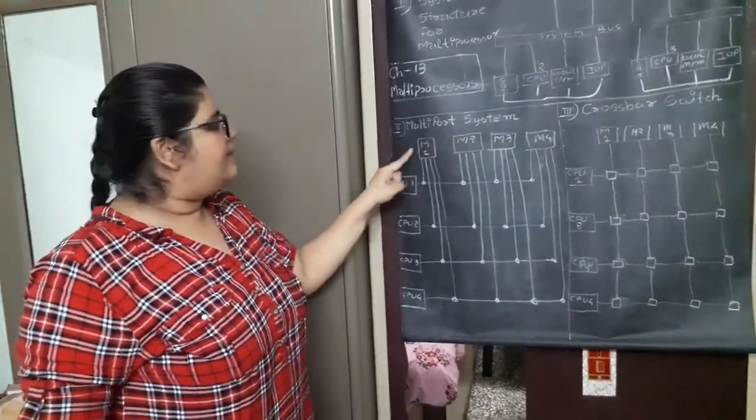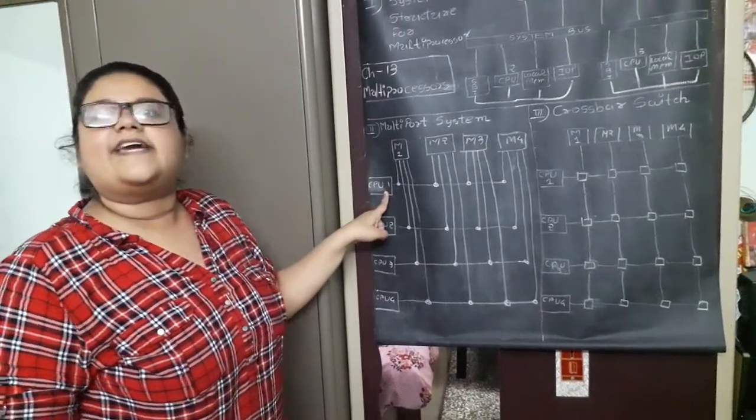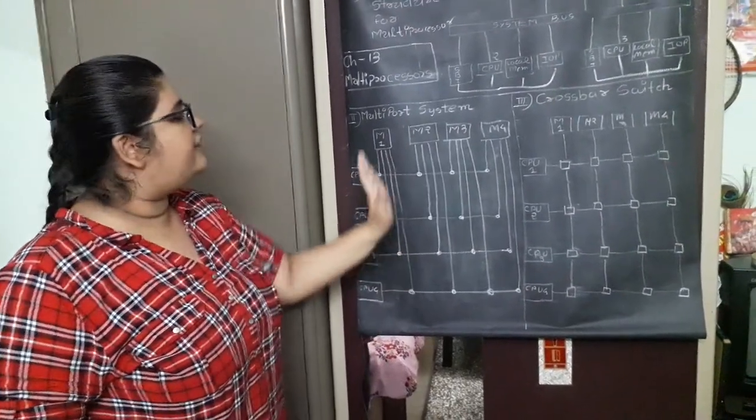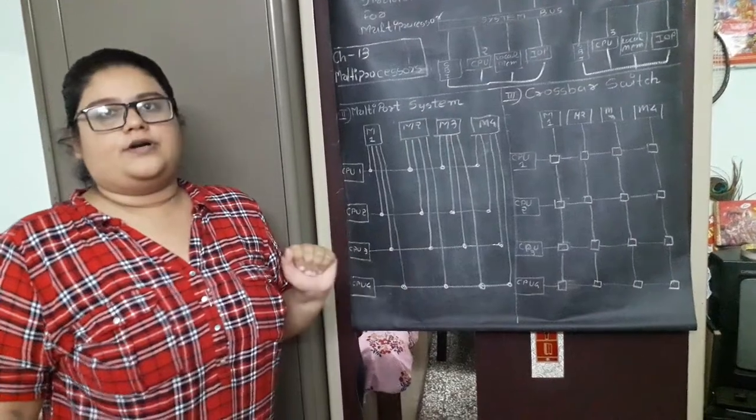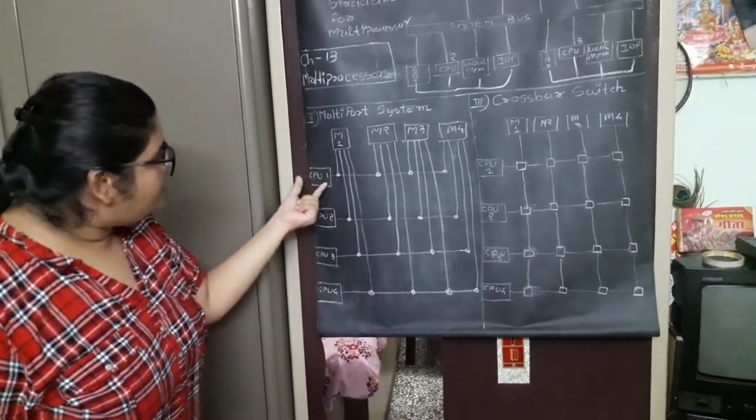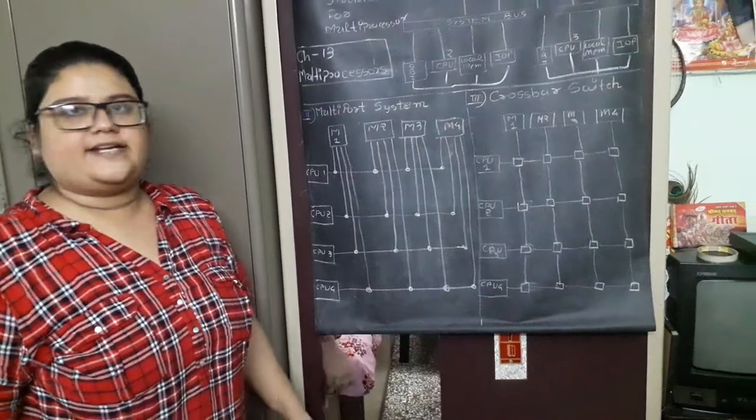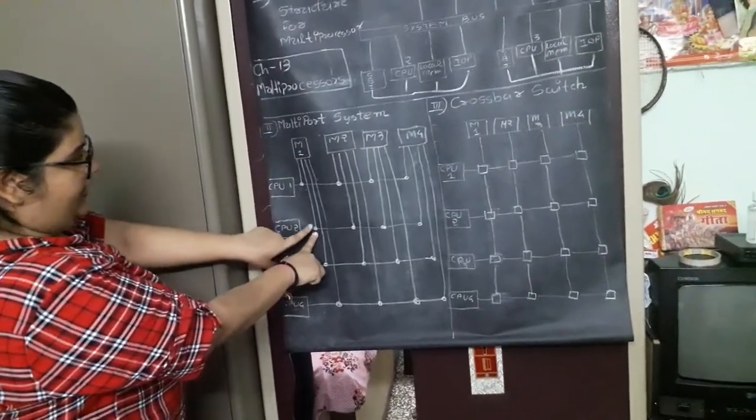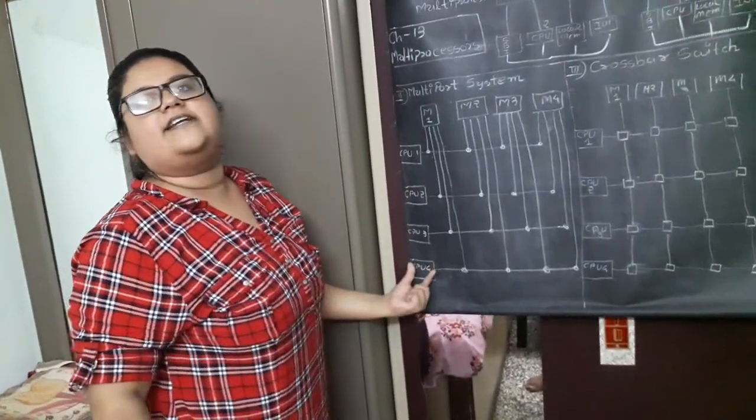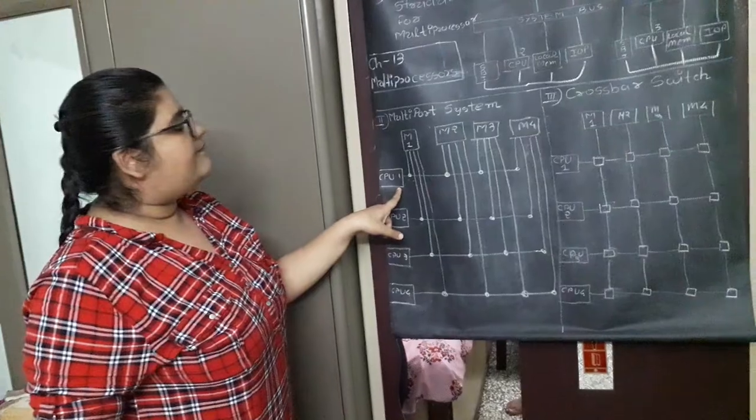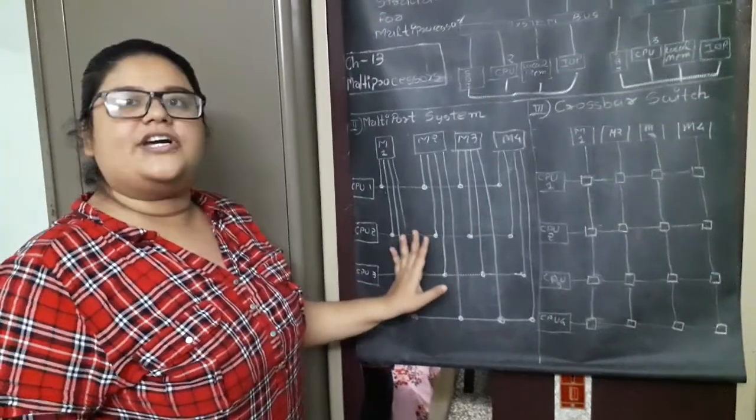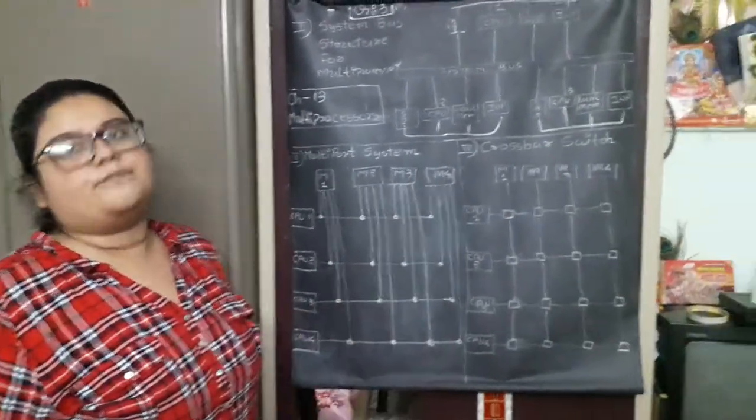The question is, if some CPU is writing the data, then parallelly second CPU cannot read. There will be again a small level of waiting state. Same type of port system is available with memory 2, 3 and 4. What is the problem over here? The CPUs are arranged with a hierarchy, with their priority. If CPU 1 is accessing memory 1, then CPU 2, if it wants to access the memory 2, it will be in a halting state because the processors are connected in a priority order. CPU 1 possess the highest priority. CPU 4 possess the lower priority. Again, this structure is facing the delay due to the priority.